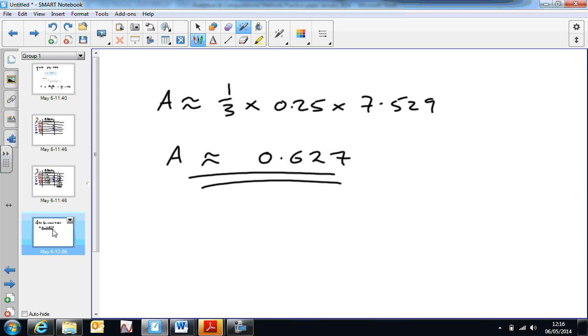So if you write down what the formula is, approximately given by a third, times the interval width, which is 0.25, times the sum of all those values. Work that out, and you get an area of about 0.627.